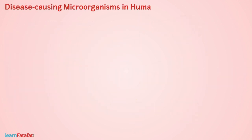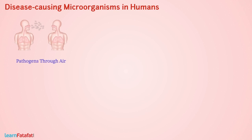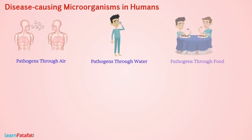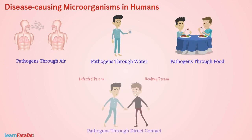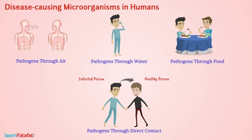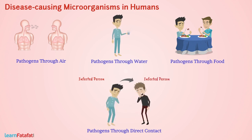Disease-causing microorganisms in humans. Pathogens may enter a body through air, water, food, or by direct contact with an infected person. The diseases that pass from an infected body to a healthy body and cause disease in the healthy body are called communicable diseases.